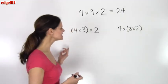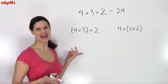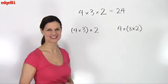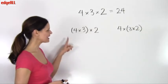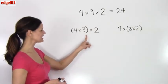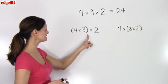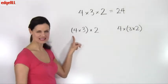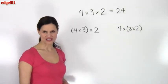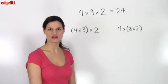There is another way of looking at the associative property of multiplication. In mathematics, we use parentheses, which are these symbols, to tell us which operations are to be performed first.